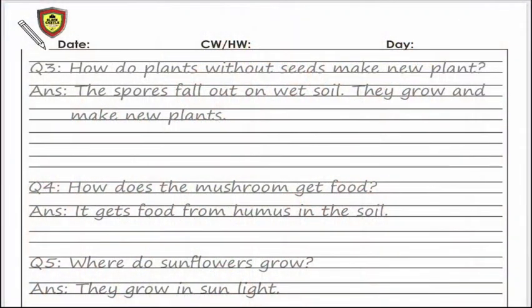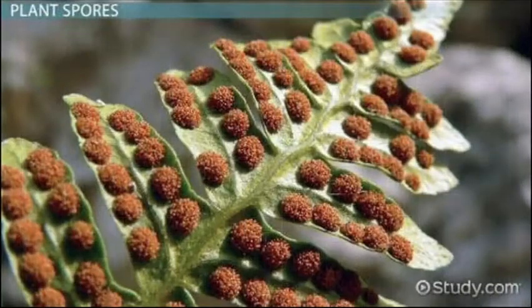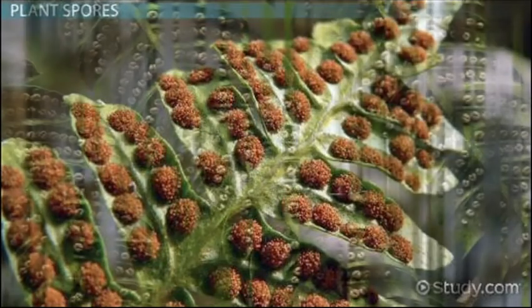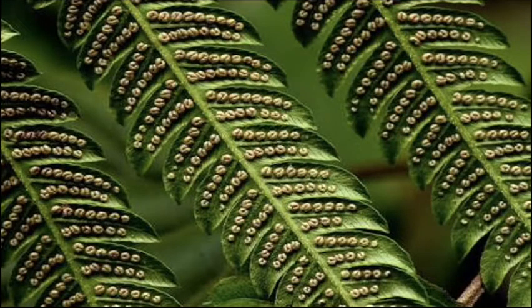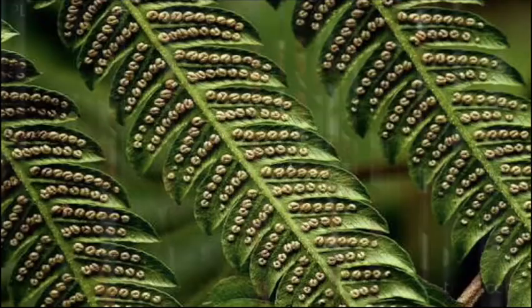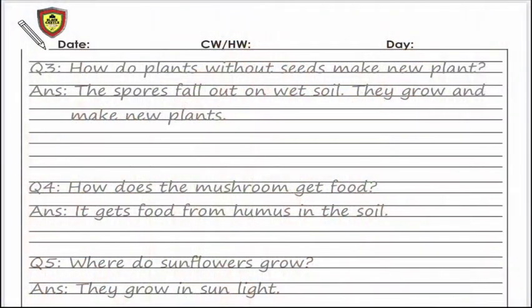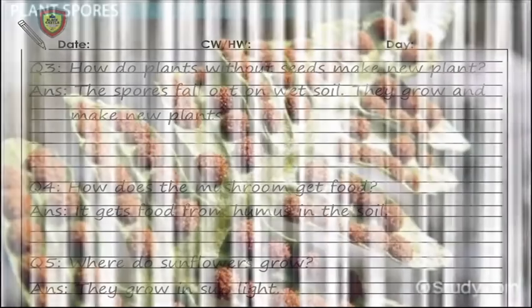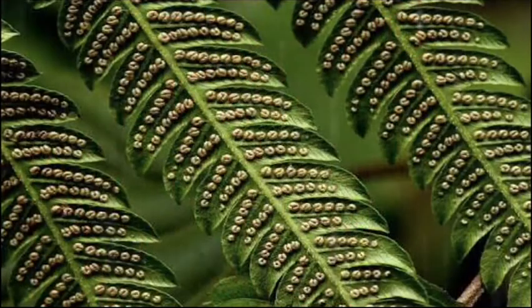Yes — plant spores! The spores fall out on wet soil, they grow and make new plants. Yeh spores neechay gir jaate hain geelee mitti ke upar, aur phir in spores ki wajah se new plants bante hain. Jab yeh spores wet soil pe girte hain to phir in se new plants grow karte hain.